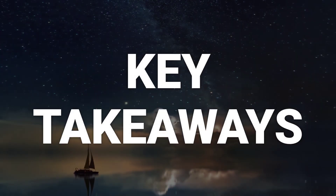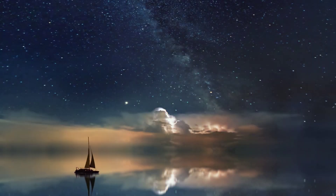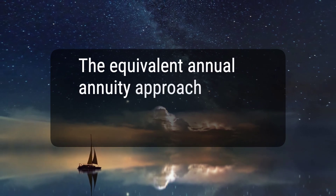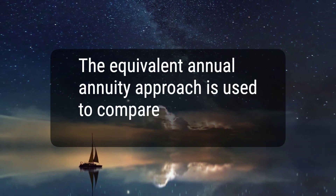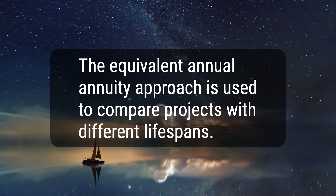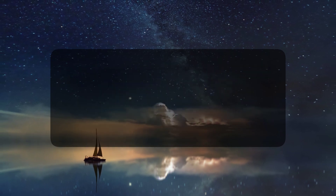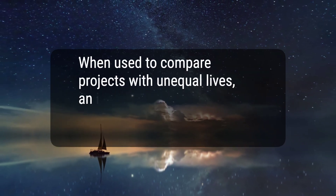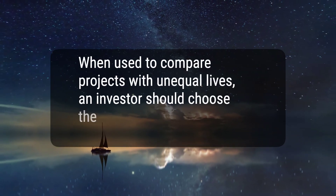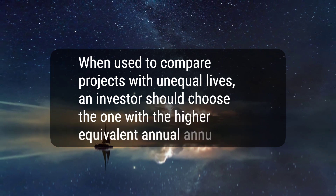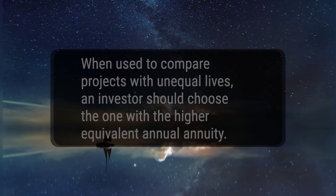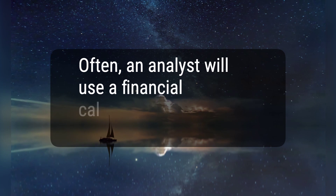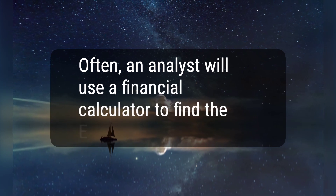Here are three key takeaways. 1. The equivalent annual annuity approach is used to compare projects with different lifespans. 2. When used to compare projects with unequal lives, an investor should choose the one with the higher equivalent annual annuity. 3. Often, an analyst will use a financial calculator to find the EAA.